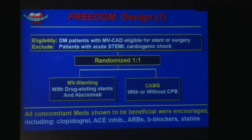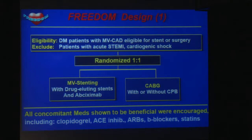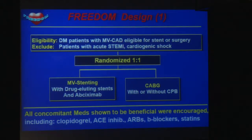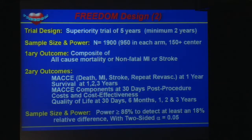The trial design: eligible patients with diabetes and multivessel coronary artery disease were randomized into multivessel stenting with drug-eluting stents and CABG with or without cardiopulmonary bypass. This was a one-to-one randomization, and both groups were very aggressively treated with medical therapy. This is a superiority trial with a duration of seven years, a minimum of two years, and a median of 3.8 years.